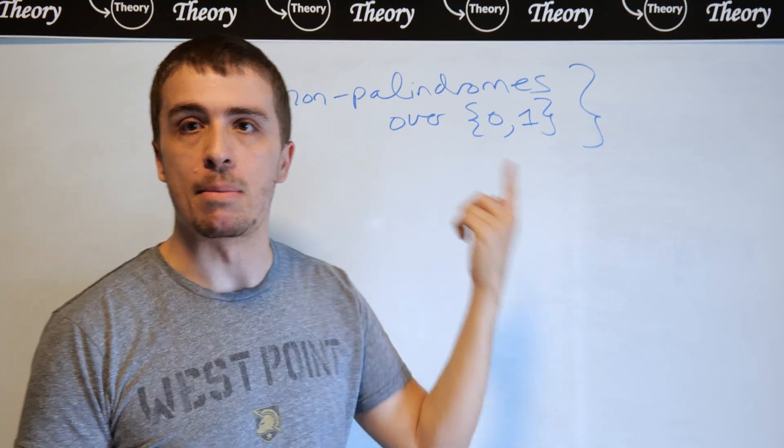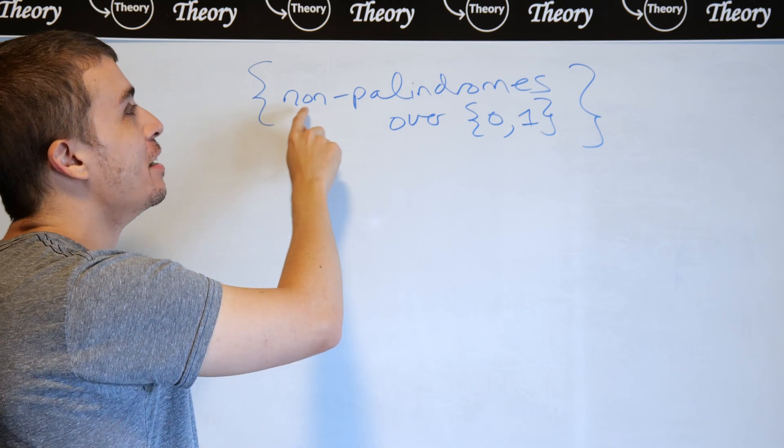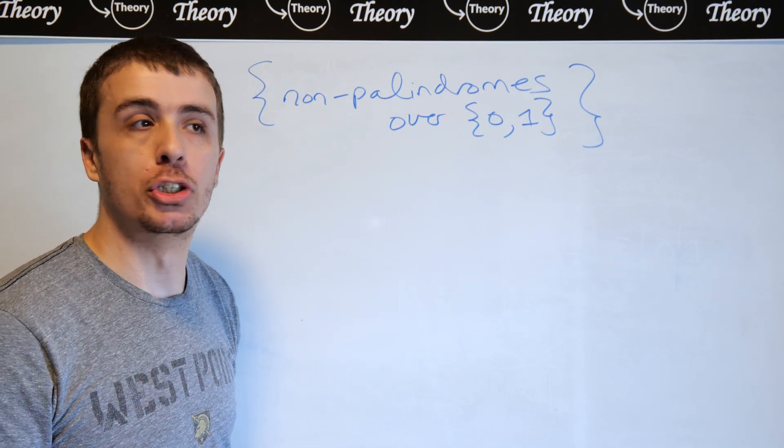Okay, so let's make a context-free grammar for this language, which I'm informally writing as non-palindromes over 0 and 1.